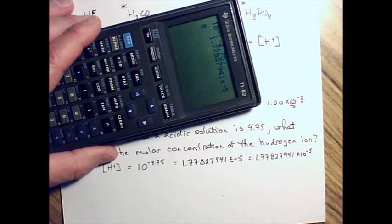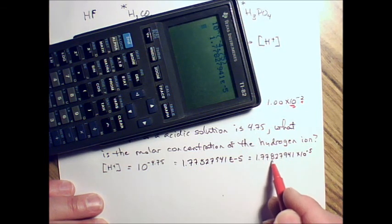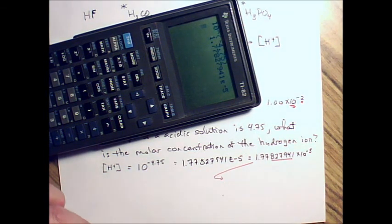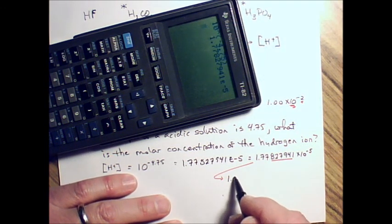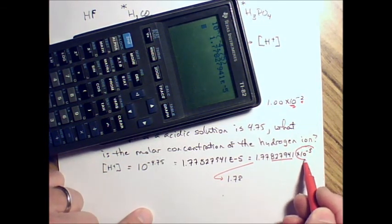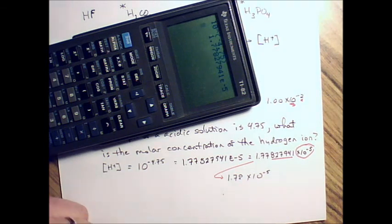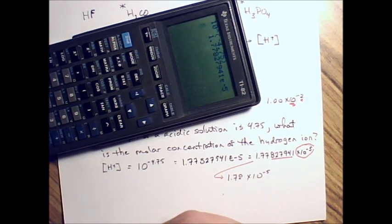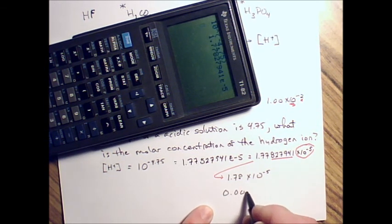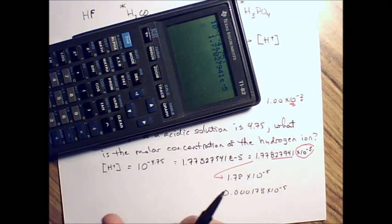We're going to round that off to 3 digits to match the 3 digits we started with. 1, 2, 3. Underline. Draw an arrow. And we get 1.78, and we can't forget that, times 10 to the negative 5 over here. That has to be part of our answer. Times 10 to the negative 5. And it's a perfectly reasonable answer to have 0 and 4 zeros. 1, 7, 8 times 10 to the negative 5. Those are the same thing.